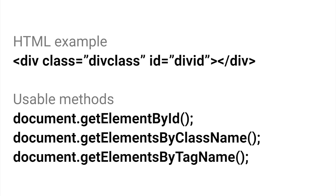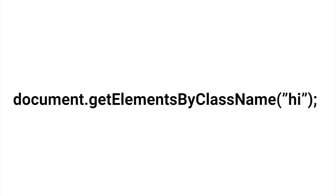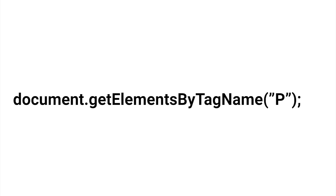To refer to the DOM, we use the document object currently loaded in the browser. By saying document dot something, we can do something to the document. To grab an element by ID, we say document.getElementById, then inside the parentheses we refer to the ID name of the element. We can also grab an element by class using document.getElementsByClassName, or by tag name using document.getElementsByTagName.